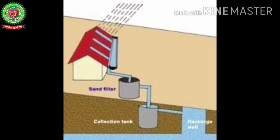In this image you can see that the rainwater is collected over the rooftops and is channelized through small PVC pipes into a sand filter, collection tank, and recharge well.